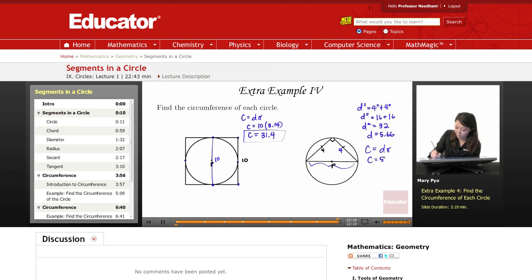That would be 5.66 times pi or 3.14, and your circumference is 17.77.